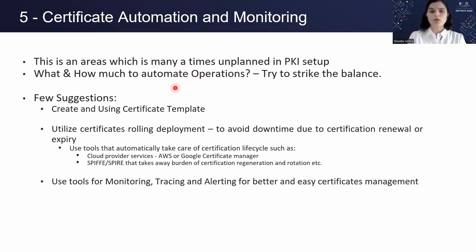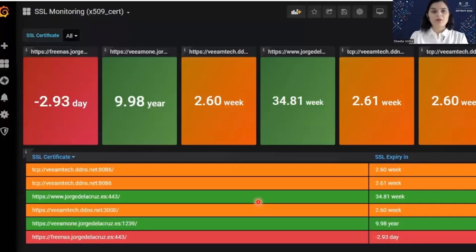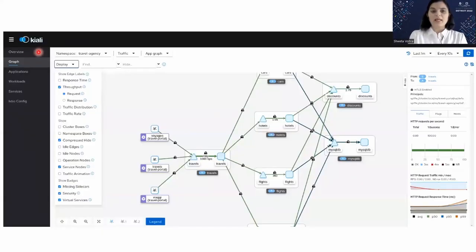The fifth design decision is certificate automation and monitoring — often an unplanned area. Create certificate templates to ensure consistent policies across your organization. Use rolling certificate deployments to avoid downtime during renewal or expiry. Tools like SPIFFE and SPIRE can automate identity issuance. For monitoring, Grafana provides dashboards showing when certificates are about to expire. Istio's Kiali shows which communications are secured with TLS and which are not. Use tools for automating, monitoring, and alerting around certificate lifecycle management.